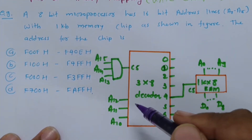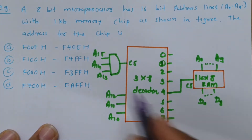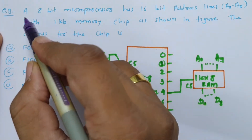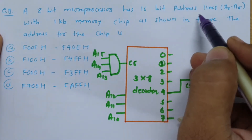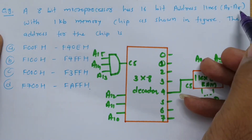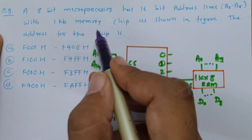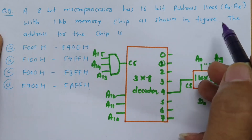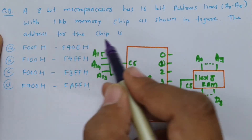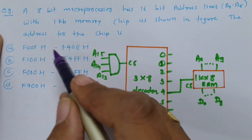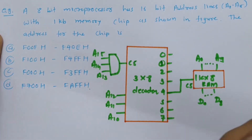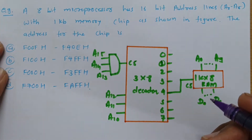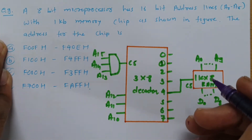Let us look at the first question. An 8-bit microprocessor has 16-bit address lines A0 to A15 with a 1KB memory chip as shown in the figure. We are given four address combinations and need to select the correct one.